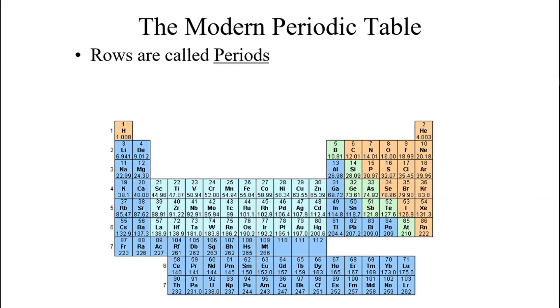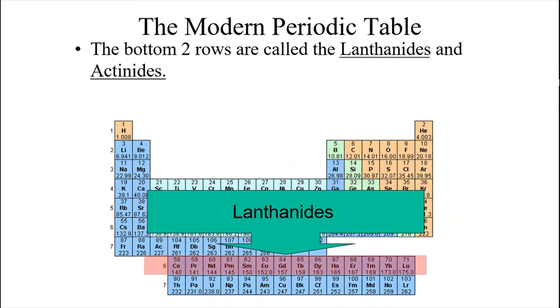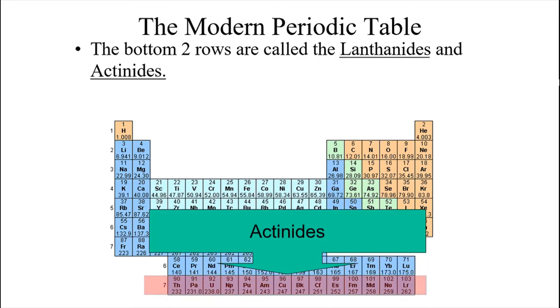Now the rows in the periodic table are called periods. So it's not row 1, row 2, row 3 - it's actually period 1, 2, 3, 4, 5, and so forth. Notice that period 6 and 7 are interrupted between atomic numbers 57 and 72, and between 89 and 104. These two sections are separate. They have different properties, and the bottom are called the lanthanides and the actinides. So this row here, this group of elements in period 6, is called the lanthanides, and the elements in period 7 that are offset here are called the actinides.